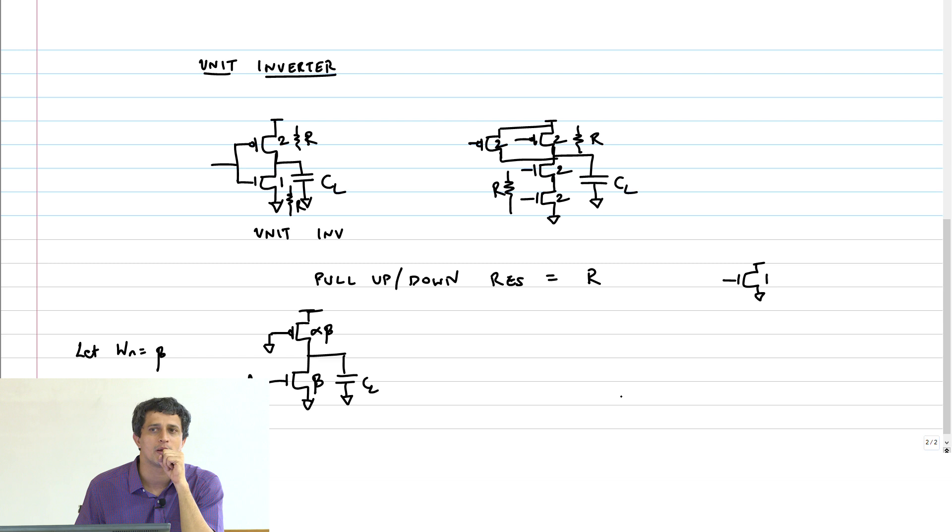So now my question is: should the unit pseudo NMOS inverter have beta equal to 1? What happens if beta equals 1? The NMOS transistor is the same—that's what we've been doing. Can I do the same here? Is beta equal to 1 possible?